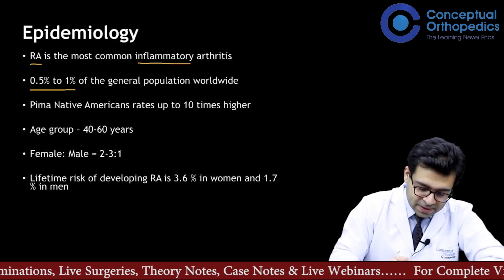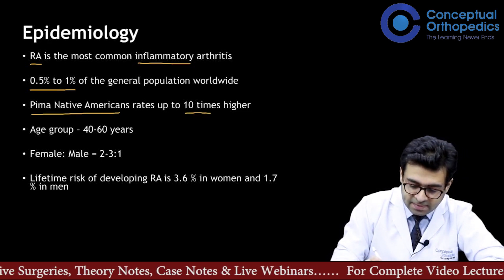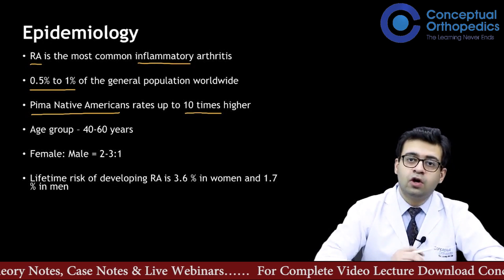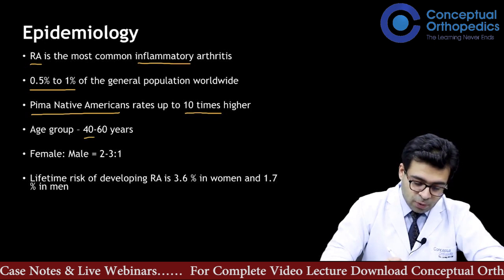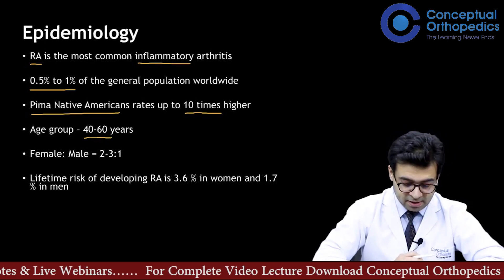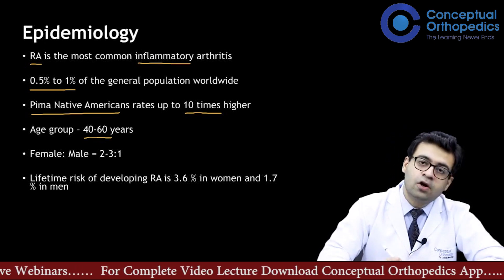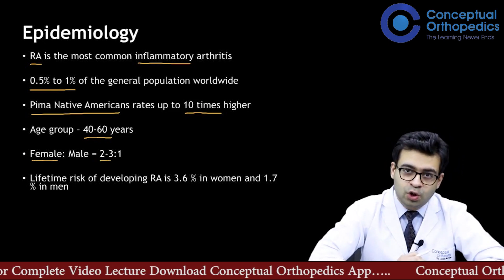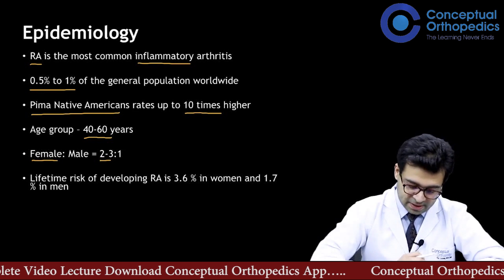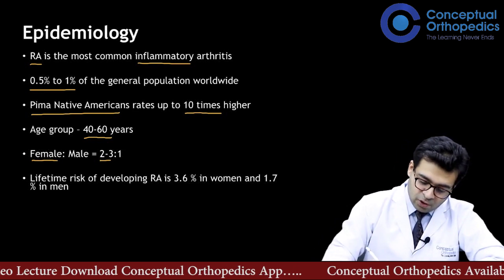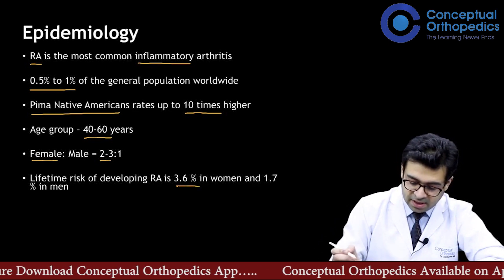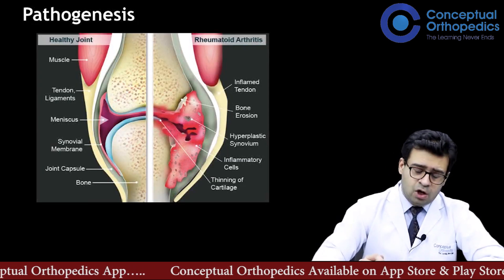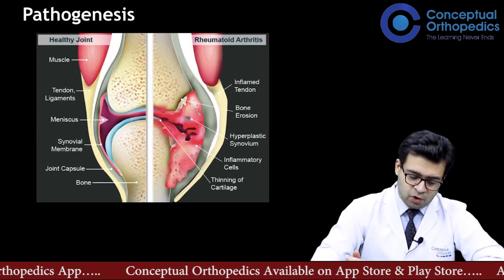Some ethnic groups like Pima Native Americans can have up to 10 times higher incidence of RA compared to other populations. The most common age group affected is 40 to 60 years. Like all other autoimmune diseases, females are much more affected than males — two to three times more. The lifetime risk of developing rheumatoid arthritis is 3.6 percent in women and 1.7 percent in men.